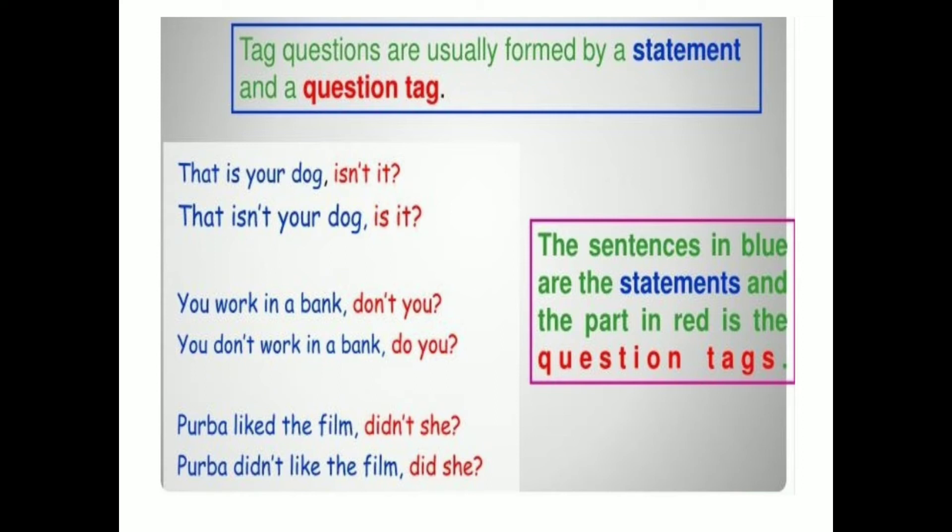Here are some examples. Number one: 'That is your dog, isn't it?' Second example: 'That isn't your dog, is it?' Next: 'You work in a bank, don't you?' 'You don't work in a bank, do you?' 'Parba liked the film, didn't she?' 'Parba didn't like the film, did she?'